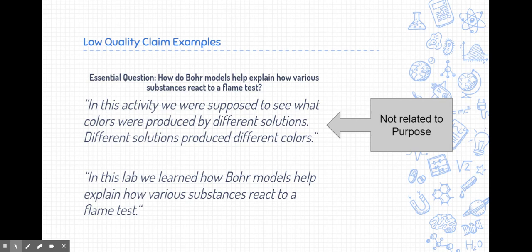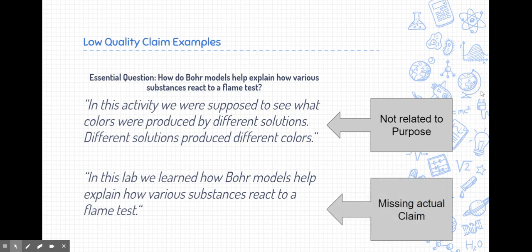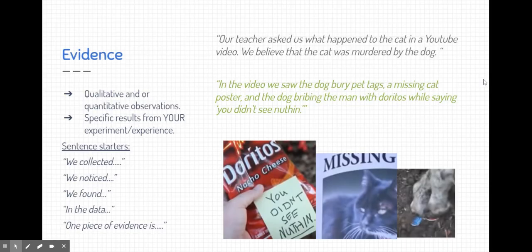Here's a second example of a low-quality claim. It says, in this lab, we learned how Bohr models help explain how various substances react to a flame test. It's off to a good start, but it's missing the actual claim. So this person took the essential question and rewrote it in a way for the claim, which is a great idea. But they didn't actually make a claim to anything.